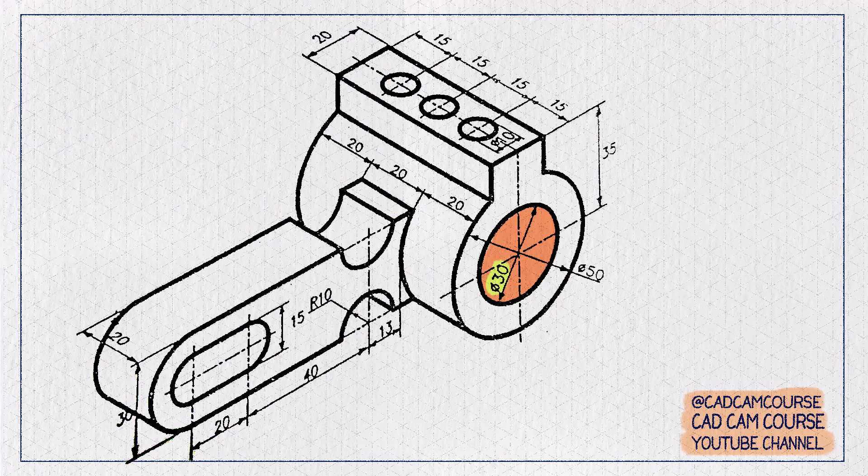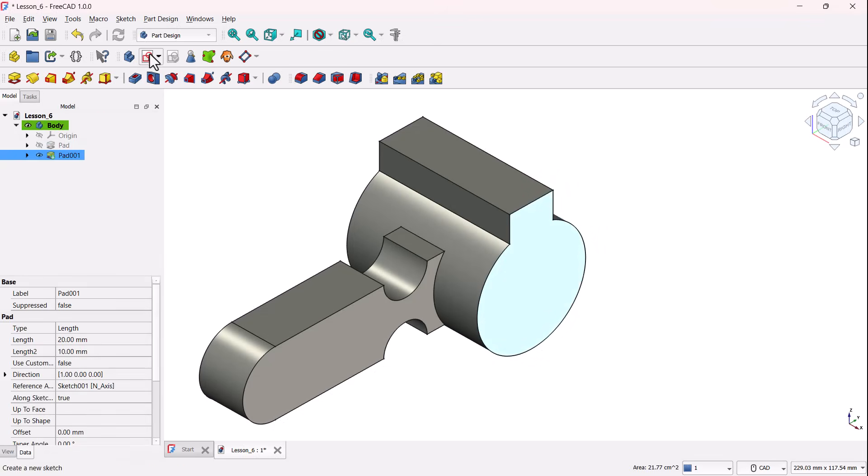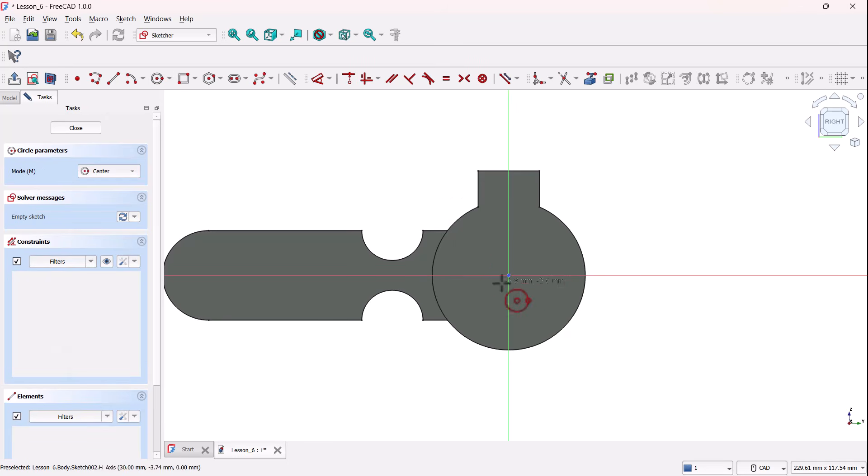Now, let's add subtractive features to remove material. Next step is to add hole to this cylinder. Select this face as plane, select create sketch tool, grab circle tool, set center as origin, and drag a circle.